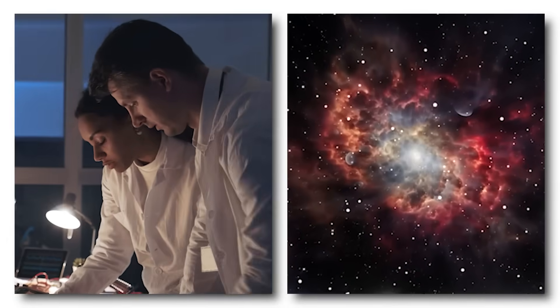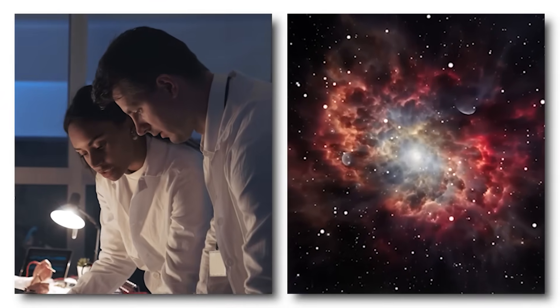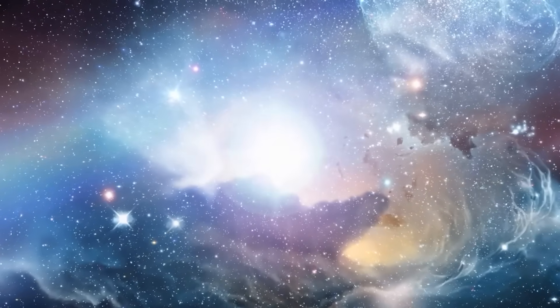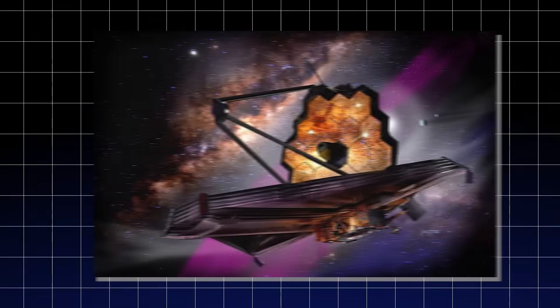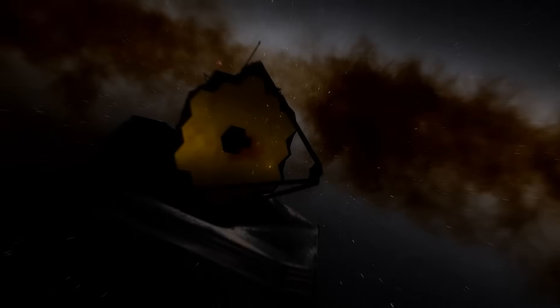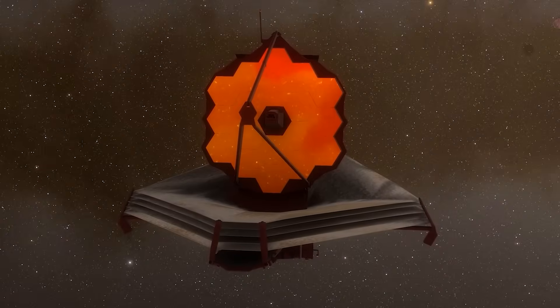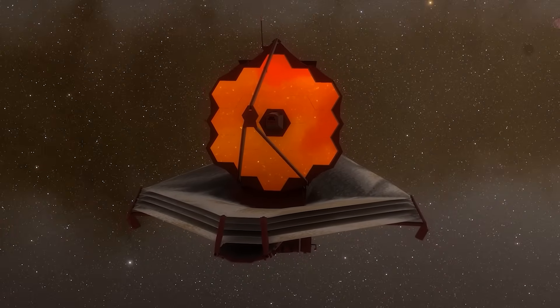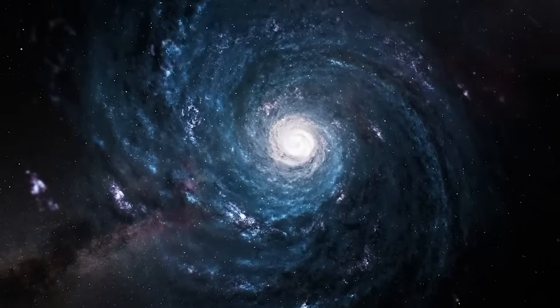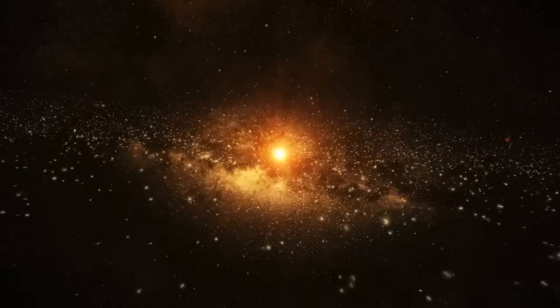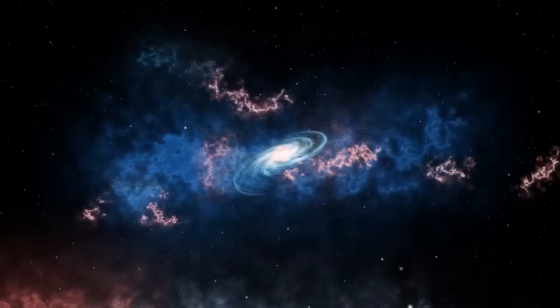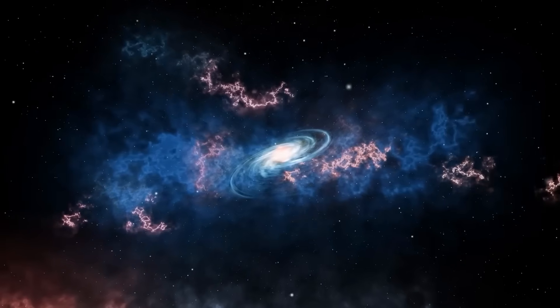For decades, scientists have worked under the assumption that the universe evolved according to predictable laws, progressing from simplicity to complexity over billions of years. But the James Webb Space Telescope has revealed a universe that was born already advanced, already teeming with structure, and possibly already observed or engineered by forces beyond comprehension. If these galaxies are relics of an earlier cycle of existence, or if they are manifestations of something that breaks the very continuity of space-time, then the entire narrative of our cosmic history must be rewritten.